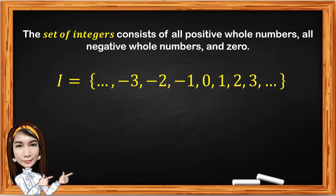The set of integers consists of all positive whole numbers, all negative whole numbers, and zero, as represented below. When a number is written without any sign, it is considered to be positive, but a negative number must be written with a negative sign.